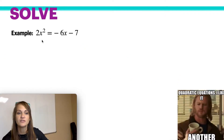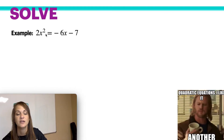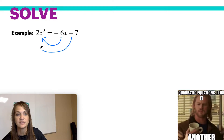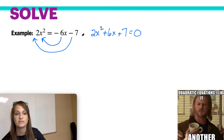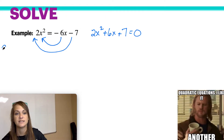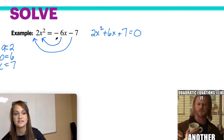In this case, we can also solve by the quadratic formula, but the problem here is that we do not have it set equal to 0. So you're going to have to get the negative 6x and the negative 7 over to the other side. When you do that, you'll get 2x squared plus 6x plus 7 equals 0, because 6 was negative so you had to add it to both sides, and 7 was negative so you also had to add it to both sides. Now a represents 2, b represents 6, and c represents 7.